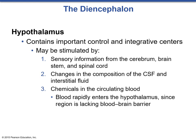The final portion of the diencephalon is the hypothalamus. It is an extremely complex and essential tissue that connects inferiorly with the pituitary gland via a stalk-like infundibulum. It has many functions and can be stimulated by sensory information from the cerebrum, brain stem, and spinal cord; changes in the composition of the cerebrospinal fluid and interstitial fluid; and chemicals in the circulating blood. Blood rapidly enters the hypothalamus via the hypothalamic-hypophyseal portal system because this area lacks a blood-brain barrier.